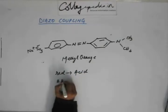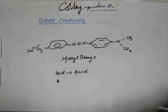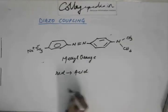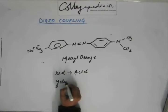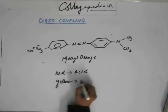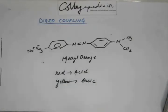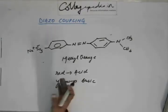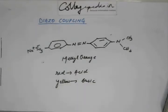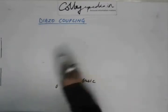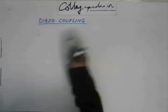Methyl orange is yellow in basic medium. So when the system turns from acidic to basic, the color of methyl orange changes, and that color change is because of conjugation. This is the kind of azo compound that you should know.